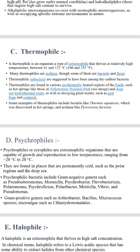Thermophiles are a type of extremophile that thrives at relatively high temperatures between 41 to 120 degrees Celsius. Many thermophiles are archaea, though some are bacteria and fungi. Thermophilic eubacteria are suggested to have been among the earliest bacteria. Thermophiles are found in geothermic and thermally heated regions of Earth such as hot springs like those in Yellowstone National Park, deep-sea hydrothermal vents, and decaying plant matter such as peat bogs and compost.